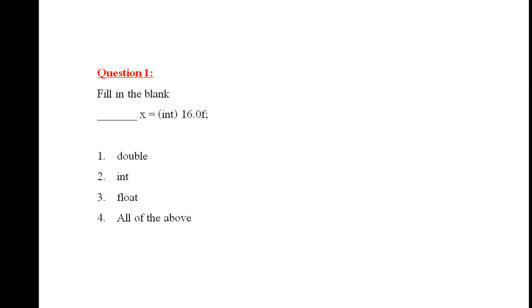Question 1: Fill in the blank — x = (int) 16.0f. The suffix 'f' means it is a float value, and the 'int' in round brackets means you are forcing the float value to be converted to integer and stored in x. The converted integer value 16 can be stored in int, double, or float. So the right answer is all of the above.